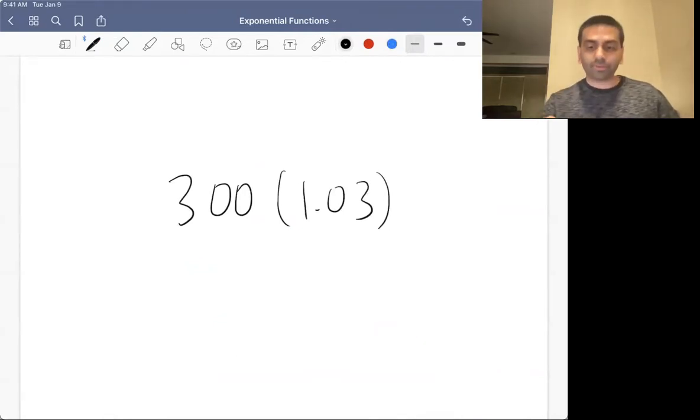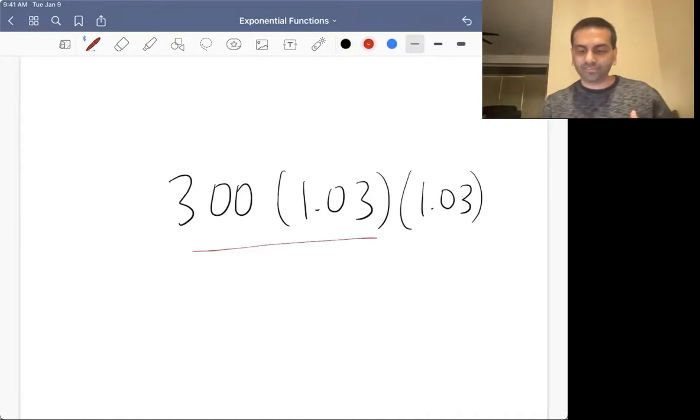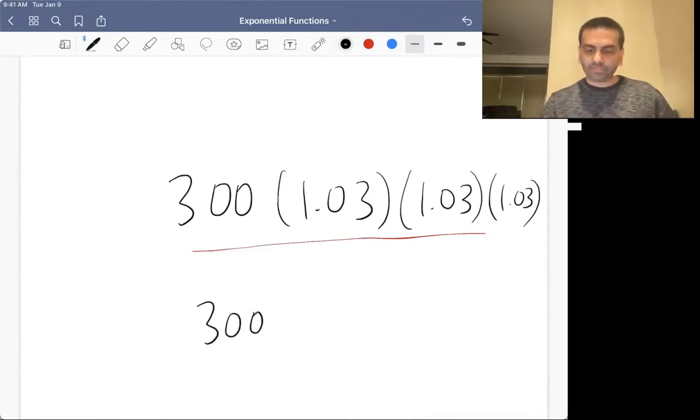But the year after, if it's also growing by 3%, well, then it's times another 1.03. Whatever it was, that was now, this was the amount you started with, and then you grew by 3%. So now, whatever this number simplifies to is what you have. And then the year after, if it grows by another 3%, you multiply it by another 1.03. So basically, you started with the 300, and you're multiplying it by 1.03, x times, if you want to see how much money you have x years later.